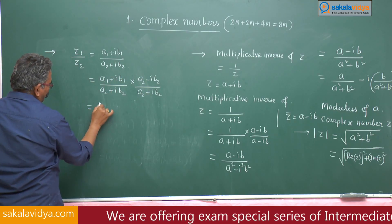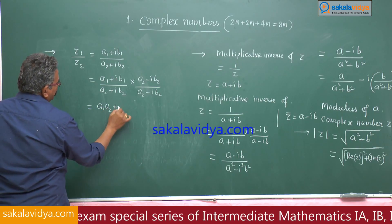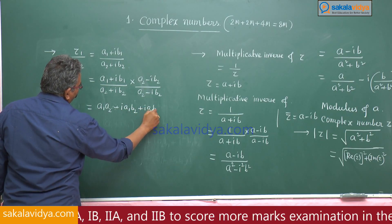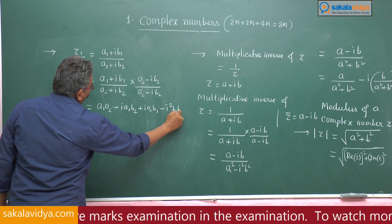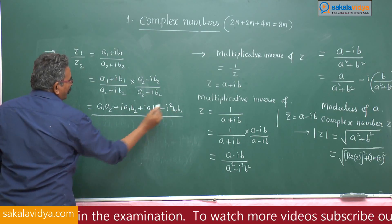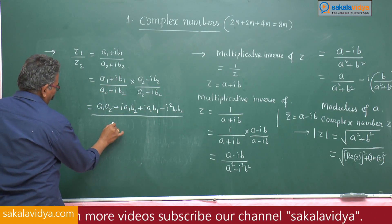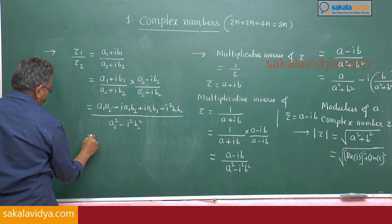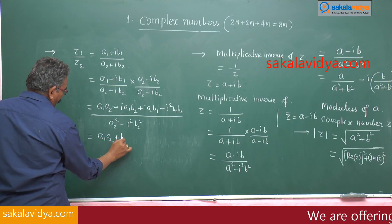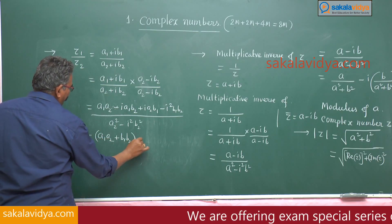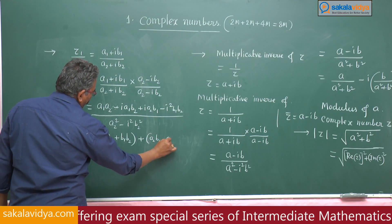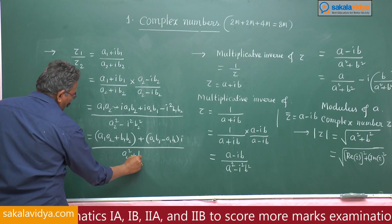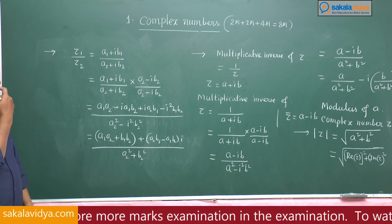Expanding the numerator: a1·a2 minus i·a1·b2 plus i·a2·b1 minus i²·b1·b2. The denominator is of the form (a+b)(a−b), giving a2² minus i²·b2². Since i² is minus 1, we get a1·a2 plus b1·b2 plus (a2·b1 minus a1·b2)·i, upon a2² plus b2². This is the division of the two complex numbers.